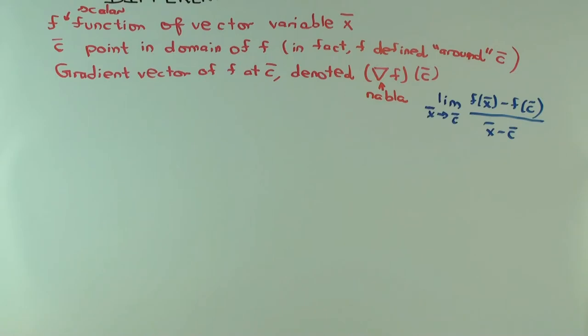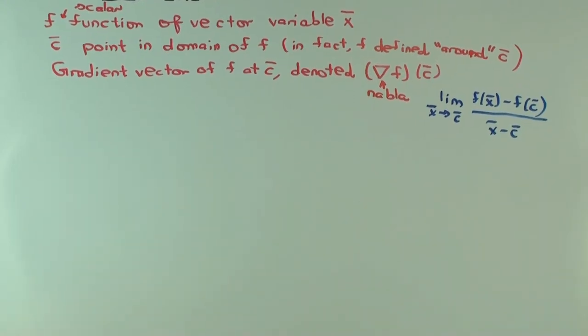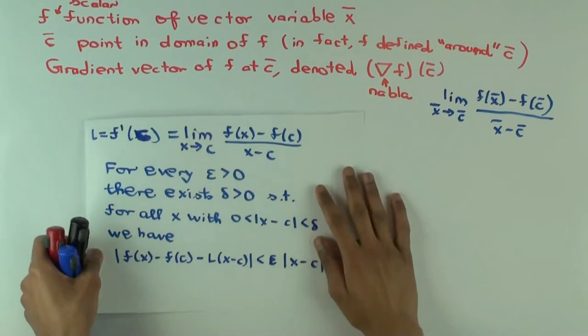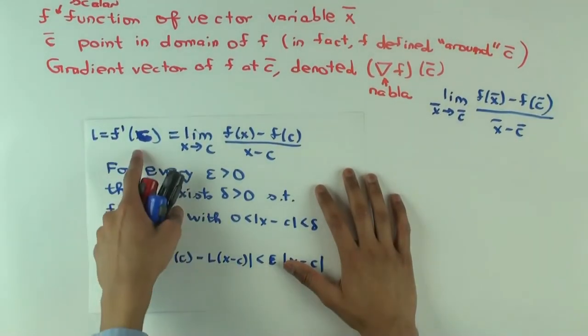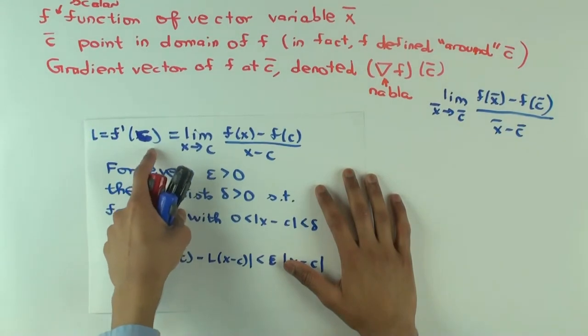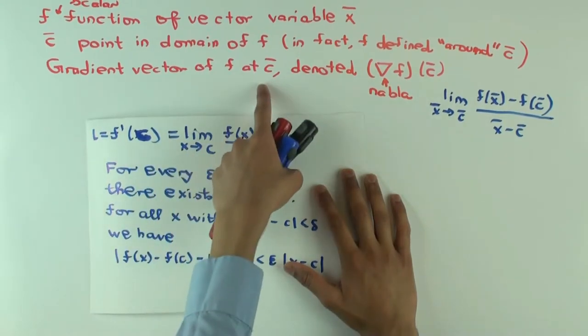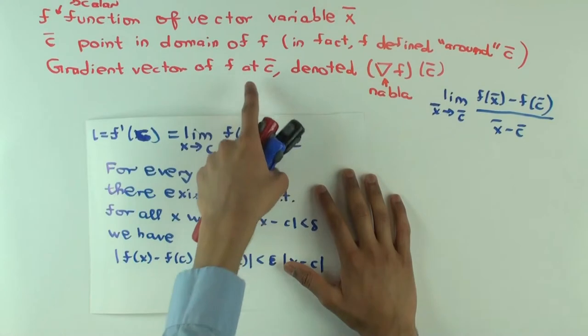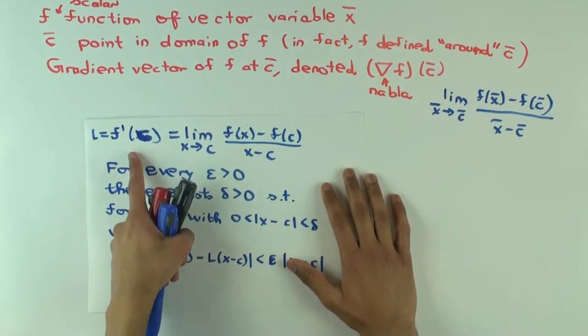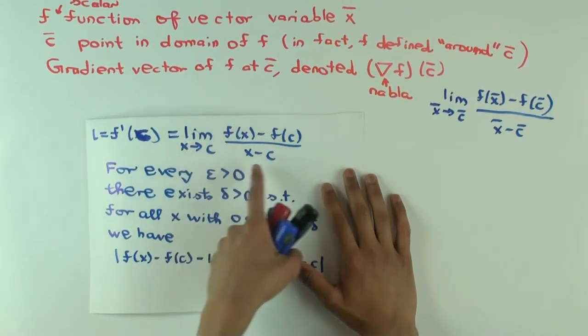So, what do we do instead? Well, we go back to the epsilon-delta definition of derivative, which you may or may not have seen, but I have a separate video on that, so you can look at that. Here, I'm just going to recall that. By the way, here, I'm using a slightly different notation from the one in that video. In that video, I used x-naught as the point at which I'm calculating the derivative. Now, I'm calling it c. So f prime c is defined like this, right?